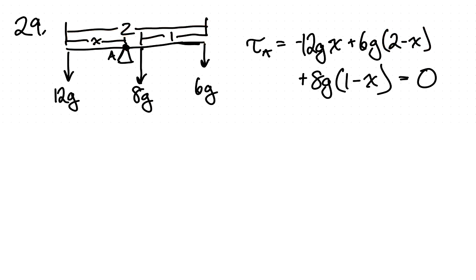And then we have the weight of the beam itself, so 8g, and the distance from here, this total distance here is 1 meter, so this distance is 1 minus x. And that all has to be 0 for this thing to not rotate about this point.